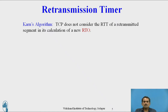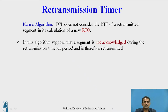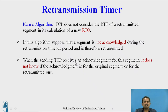What is the use of Karn's algorithm in TCP? TCP does not consider the RTT (retransmission round trip time) for a retransmitted segment in its calculation of a new RTO. In Karn's algorithm, suppose a segment is not acknowledged during the retransmission timeout period, and we therefore go to the retransmission phase. When the sending TCP receives an acknowledgement, it does not know if the acknowledgement is for the original segment or the retransmitted one, causing confusion.